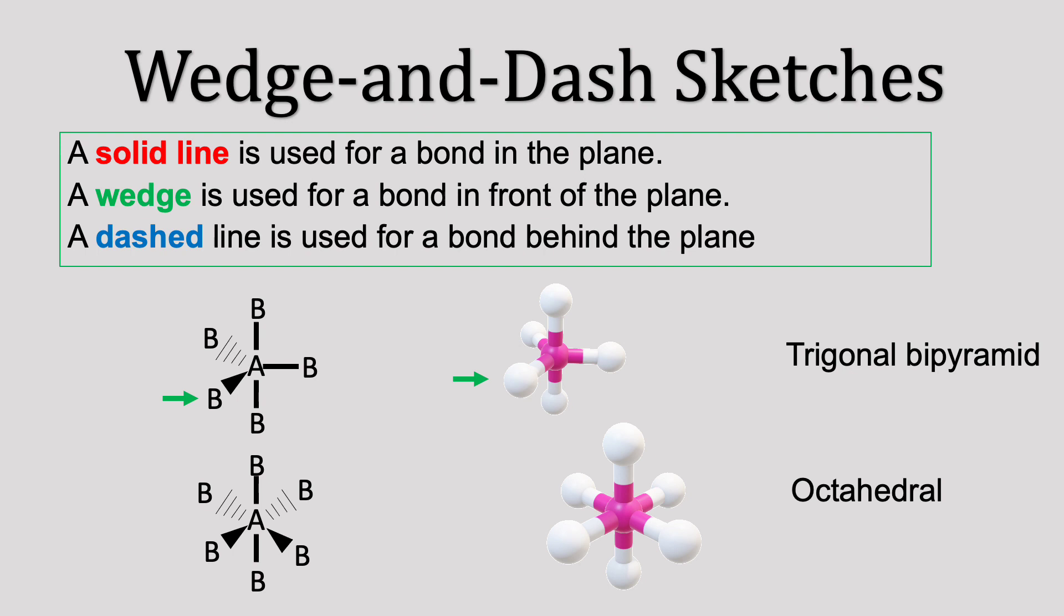There is one wedge coming out of your screen and towards you, and there's a dashed bond going out of the back of your screen, away from you.